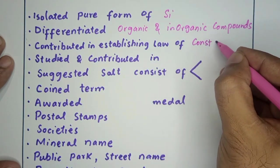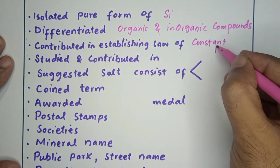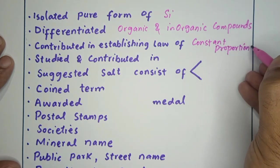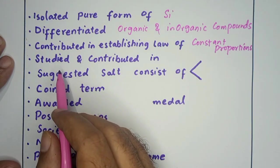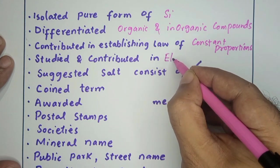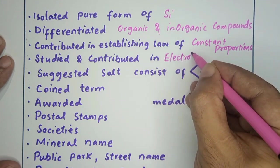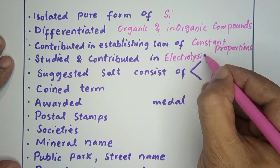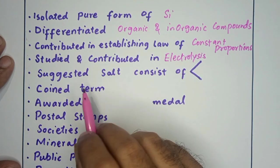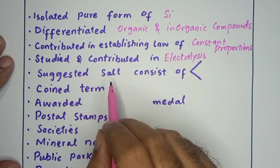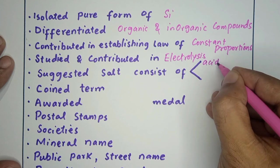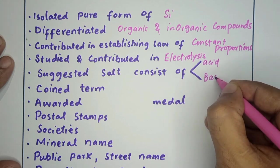He studied and contributed in field of electrolysis. By electrolysis study, he suggested that salt consists of two radicals: one is acid radical and one is base radical. Jacob Berzelius was the person who coined the term protein.